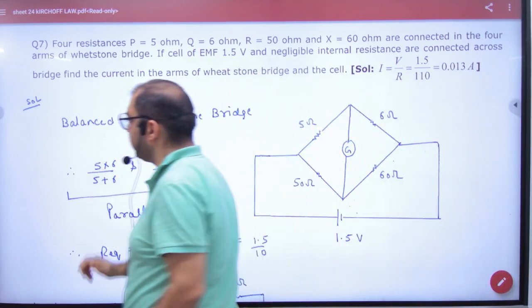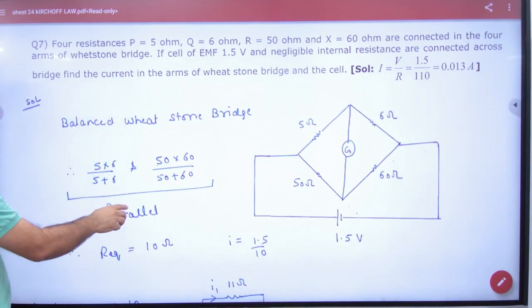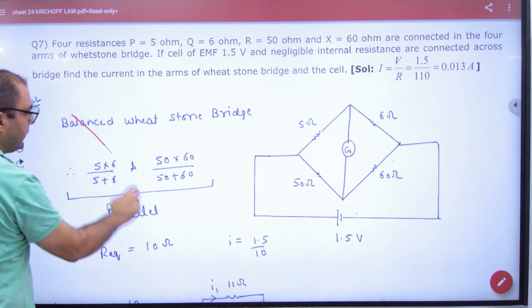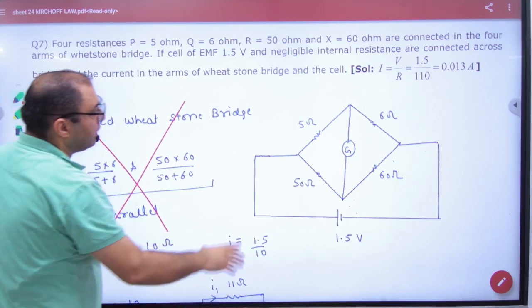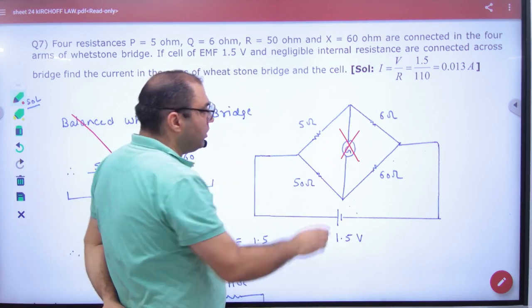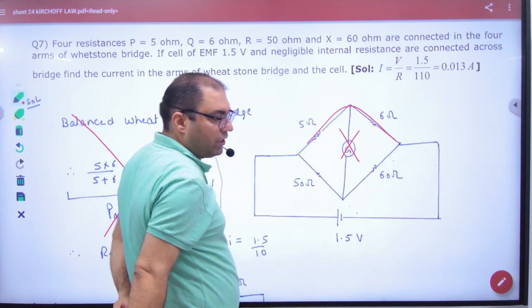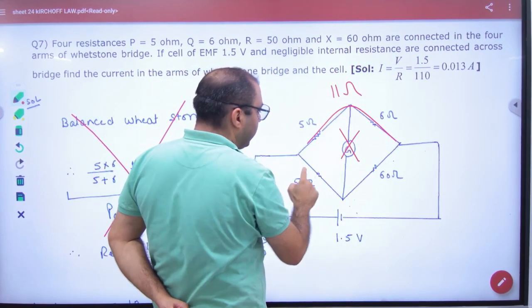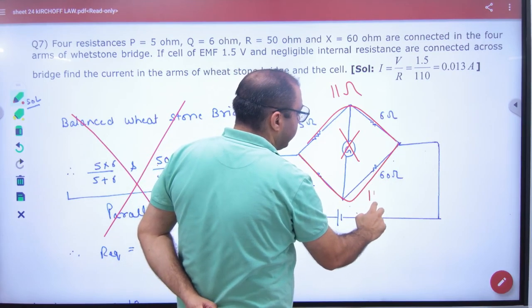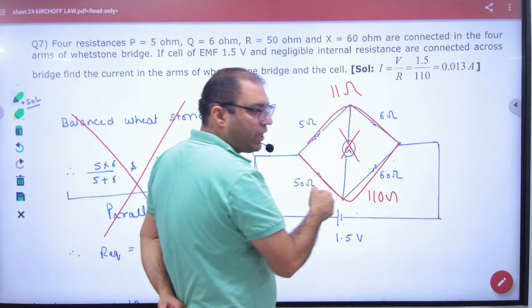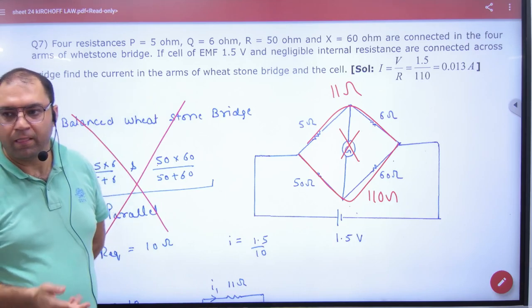In this when it is balanced it will not work. So these two will be in series, so this will be 11 ohm and these will be in series 110 ohm. These will be in parallel. Right? Clear?